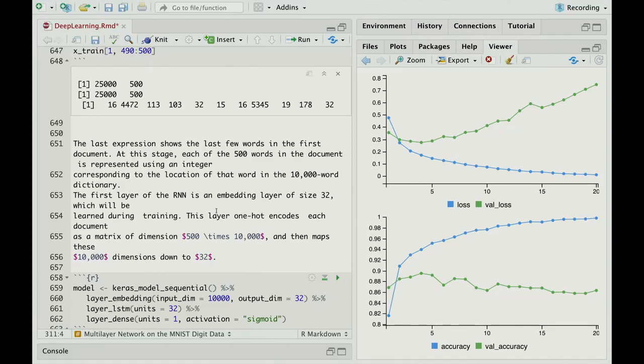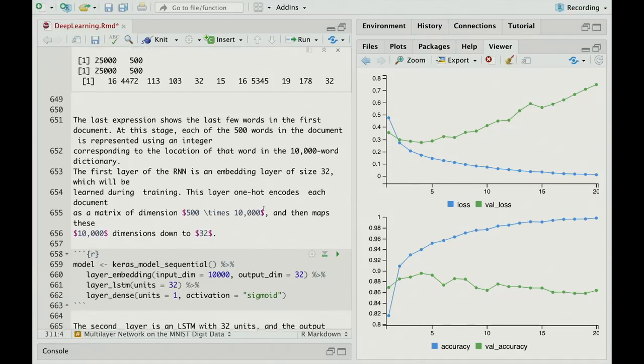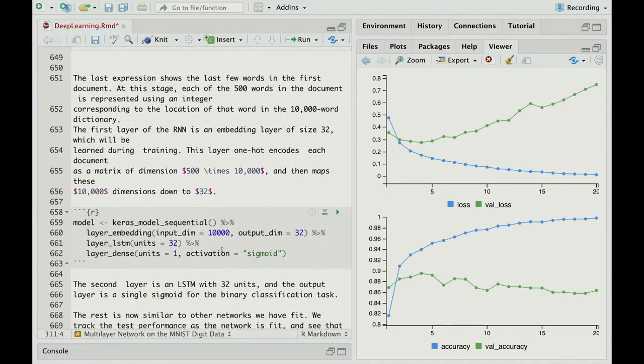So the first layer of the recurrent neural network is going to be an embedding layer of size 32. And then we're going to learn that during training. So rather than encode the word as a one-hot encoding with 10,000 elements and only one of them one, we're going to learn an embedding layer, which has just got 32 elements. And so you'll go from the digit label to a 32 vector, and that embedding layer is going to be learned. You can think of it as multiplying this binary vector by the matrix, but it's done more efficiently than that.